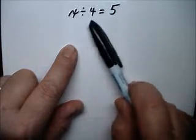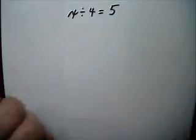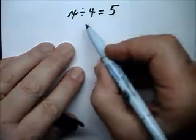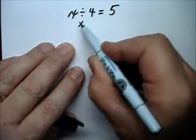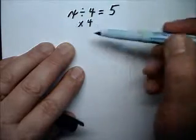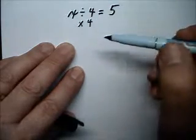In algebra, you can do whatever you want to both sides of the equation. Since this is divided by 4, the way to show this in algebra is to multiply by 4. The divided by 4 and the multiplied by 4 cancel out.